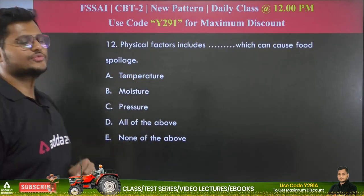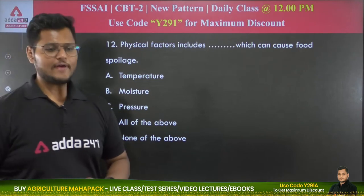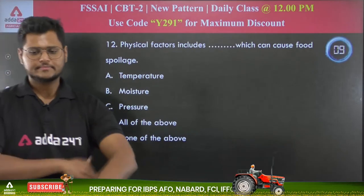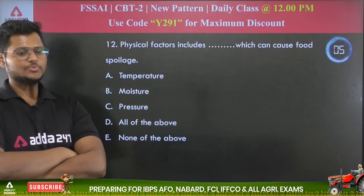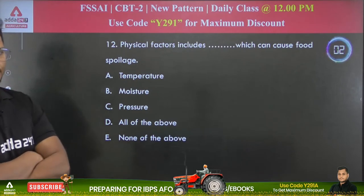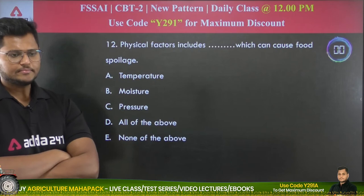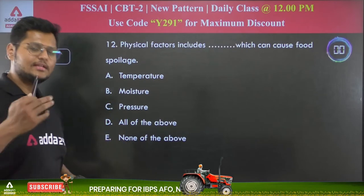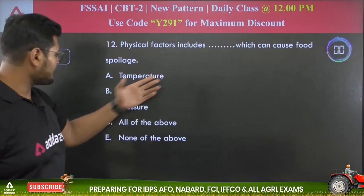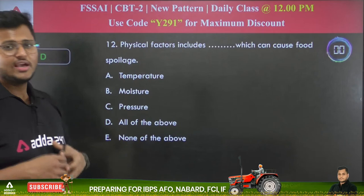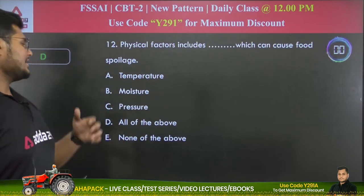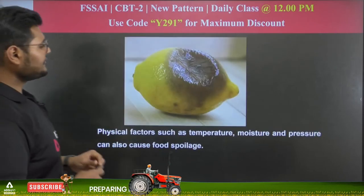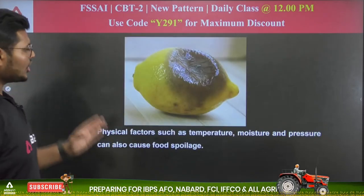Question 12: Physical factors that can cause food spoilage include — temperature, moisture, pressure, or all of the above? The answer is all of the above. High moisture content, high temperature, and high pressure can all deteriorate food. Temperature, moisture, and pressure are the physical factors responsible for causing food spoilage.